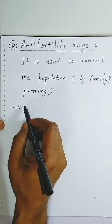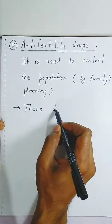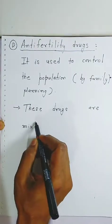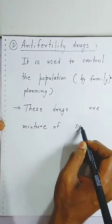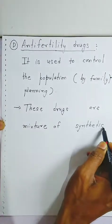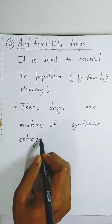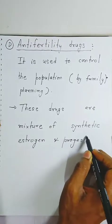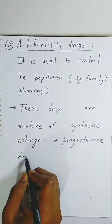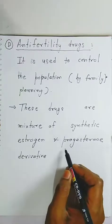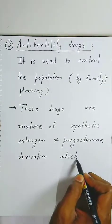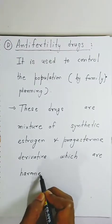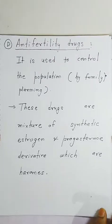These anti-fertility drugs are a mixture. They are a mixture of synthetic estrogen and synthetic progesterone derivatives, which are hormones. Estrogen and progesterone are the hormones involved.